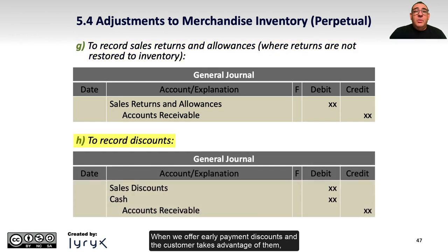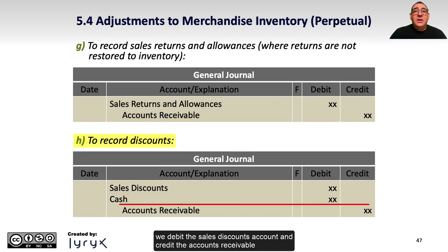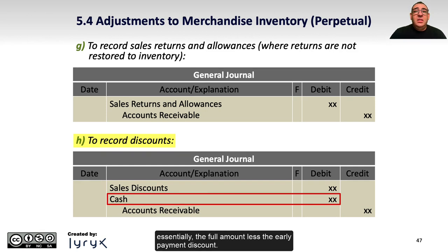When we offer early payment discounts and the customer takes advantage of them, we debit the sales discounts account and credit accounts receivable for the full amount owing, and debit cash for the net amount received — essentially the full amount less the early payment discount.